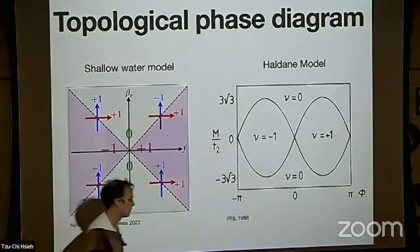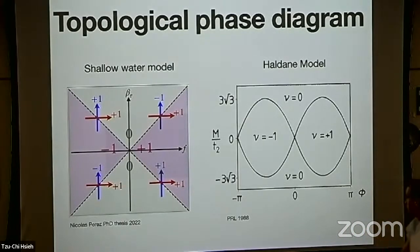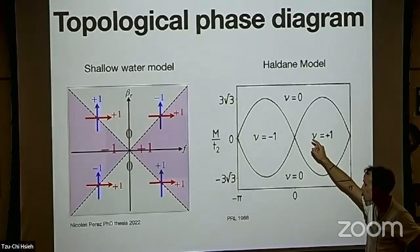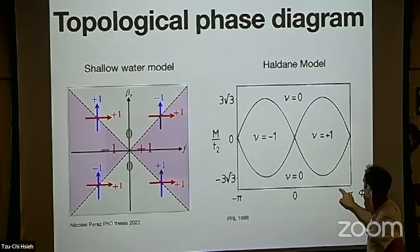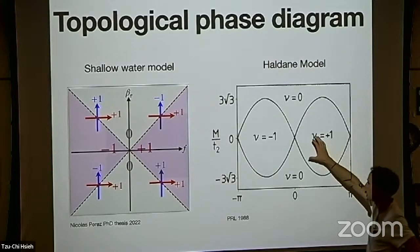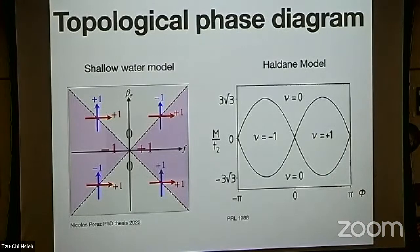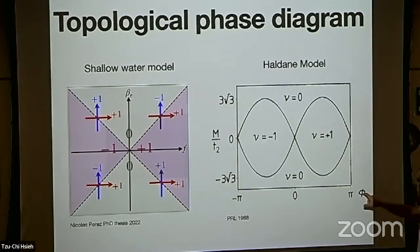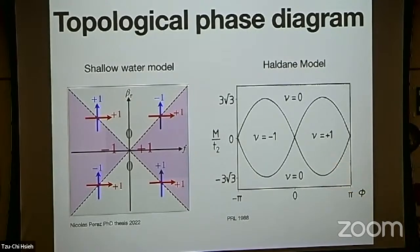The bulk-interface correspondence relates a PDE with spatially varying coefficients defining an interface along a critical line to a bulk problem studied topologically. You define a Chern number by varying a parameter. This is different from the standard bulk-boundary correspondence of topological insulators, and it took us a while to understand this distinction. What was very important for the Nobel Prize — in Haldane's model — was understanding the key importance of breaking time-reversal symmetry to obtain quantized effects without Landau levels and without magnetic fields.